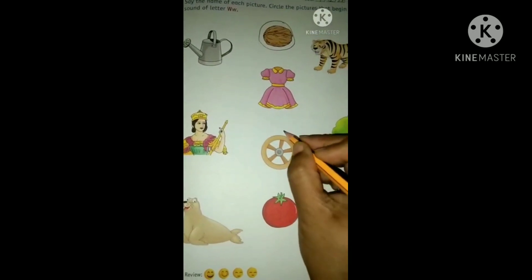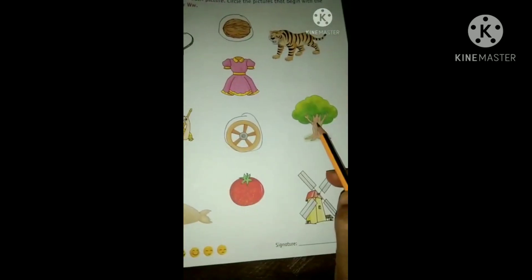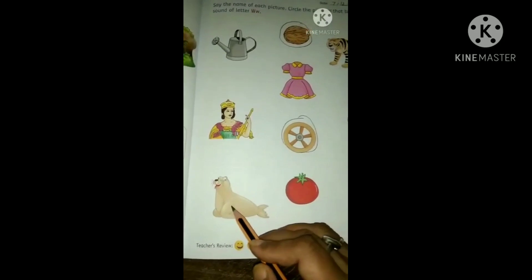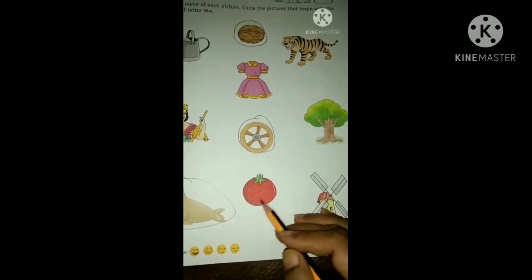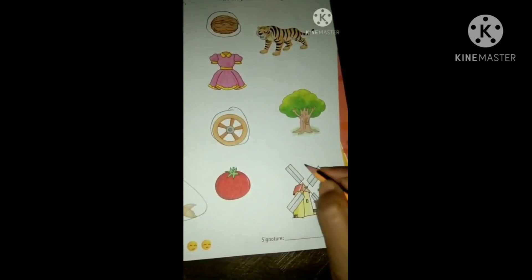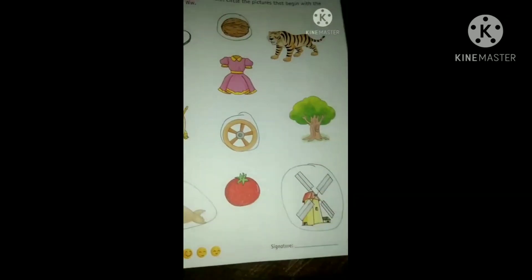W for wheel, yes. W for tree, no. W for walrus, yes. W for tomato. W for windmill, yes.